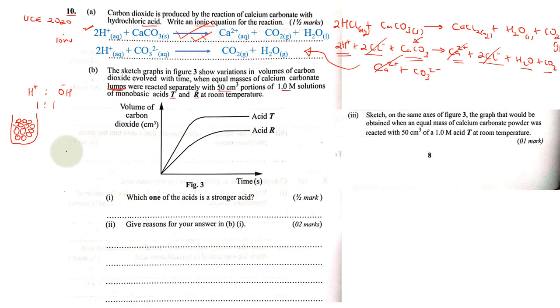Which of the acids is a stronger acid? Now we have volume of carbon dioxide on the y-axis and time on the x-axis, meaning as we add the acid to the calcium carbonate, we start seeing carbon dioxide being evolved as shown in our equation. Whenever the acid reacts with our calcium carbonate, they ask which of the acids is stronger. Acid T is a stronger acid.